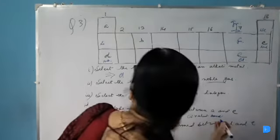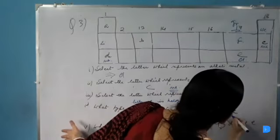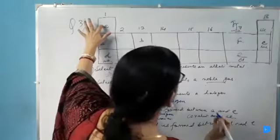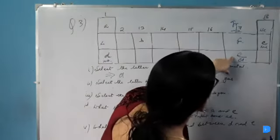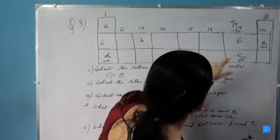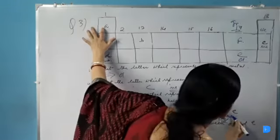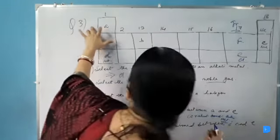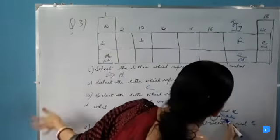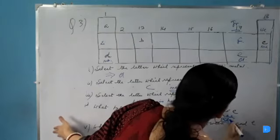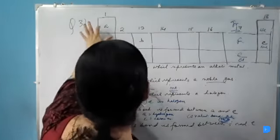The compound will be AE because A has valency one and E also has valency one, so the formula of the compound will be AE. If A is hydrogen and E is chlorine, then the compound is HCl — hydrogen chloride. So it is a covalent compound.